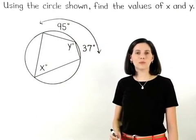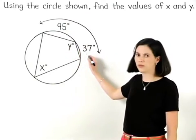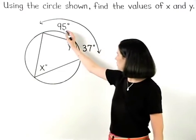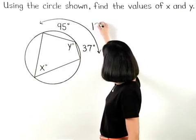Since we're given that the two parts of this arc measure 95 and 37 degrees, then the full arc measures 95 plus 37, or 132 degrees.